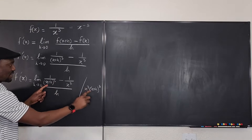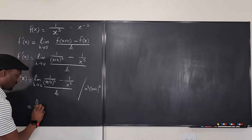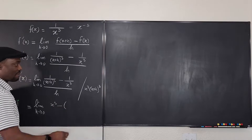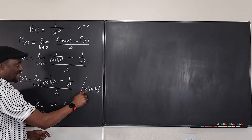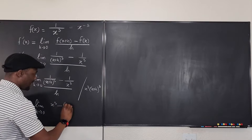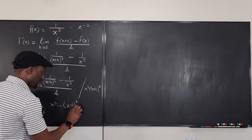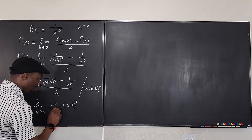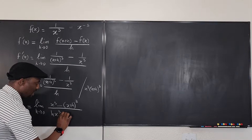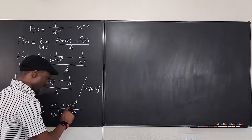When x cubed times (x+h)³ multiplies the first term, it cancels the (x+h)³ denominator and leaves x cubed. For the second term, it cancels the x cubed denominator and leaves (x+h)³. The top becomes x cubed minus (x plus h) cubed, and the bottom is h times x cubed times (x plus h) cubed. Our next step is to expand (x plus h) cubed.